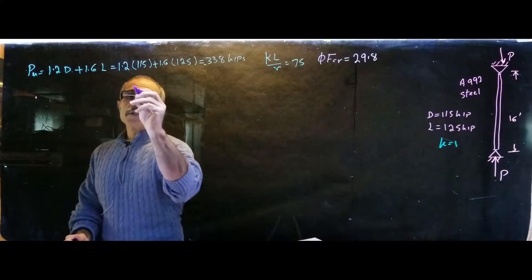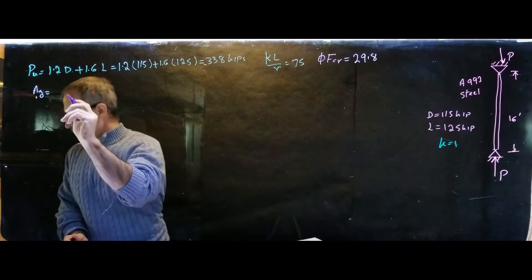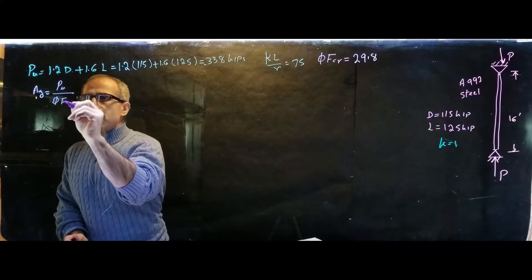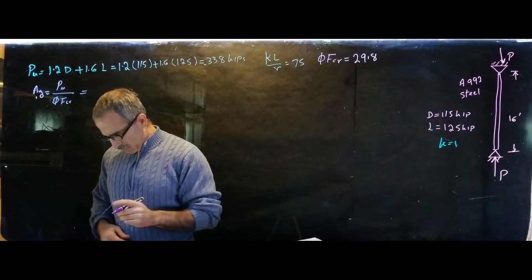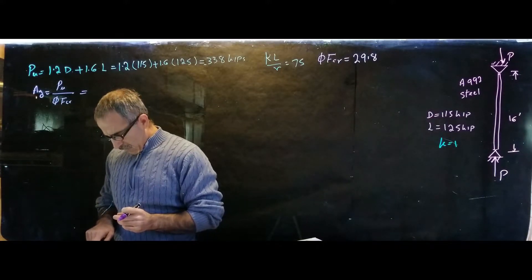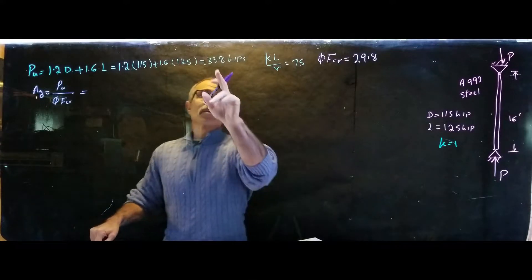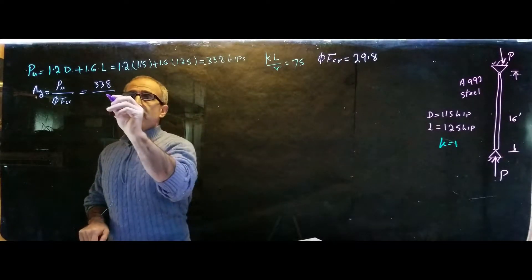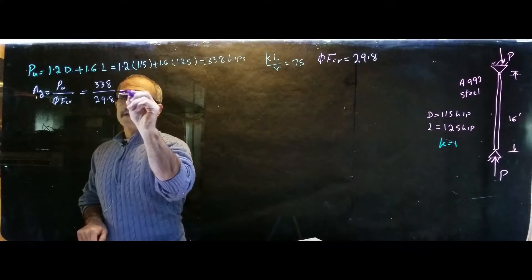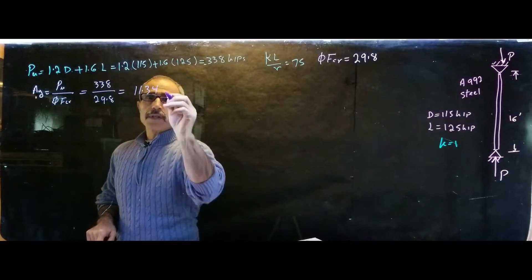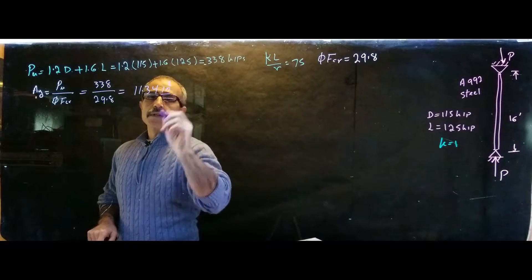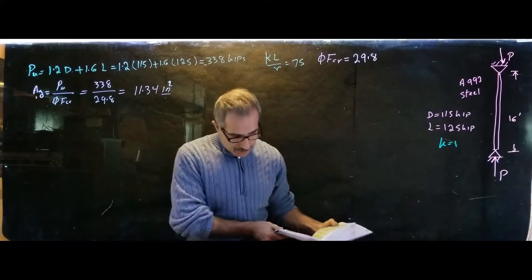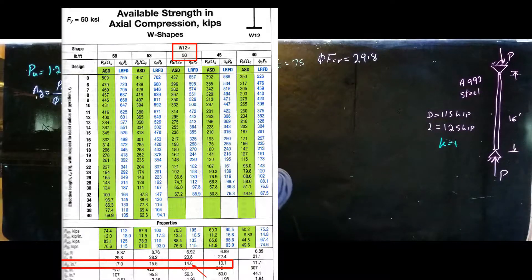Our Ag comes out to Pu divided by phi times critical stress. We have our Pu came out to 338 and divide that by 29.8. That gave me the area of 11.34 square inches. So now you have that area.